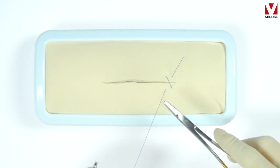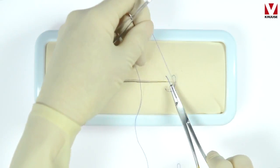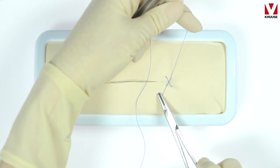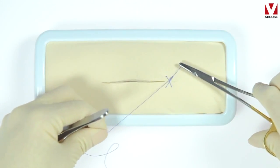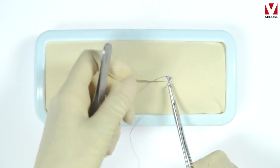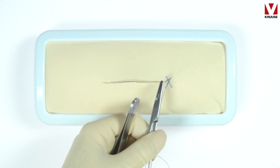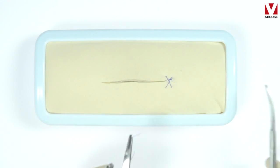When you tie the knot, you can use either a 2-1-1 or a 3-1-1 throw. Here we make a 2-1-1, and be careful when you tie the first knot on top of the two throws that you position the knot laterally to the incision and not on top of the incision.